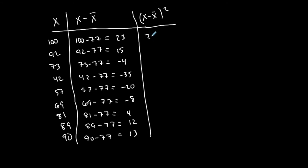So now I'm going to take 23 and square it. I'm going to take 15 and square it. That's going to make all of these positive, because even a negative value squared is going to make it positive. So 23 squared is 529. 15 squared is 225. This is 16, 35 squared is 1225, 20 squared should be 400. This is 64, 16, 144, 169.